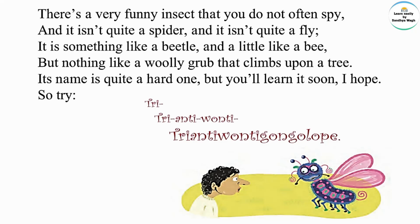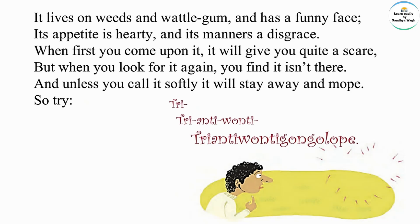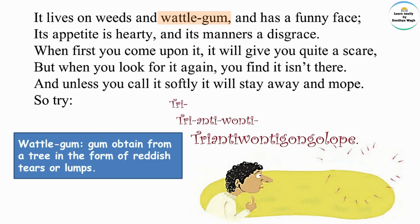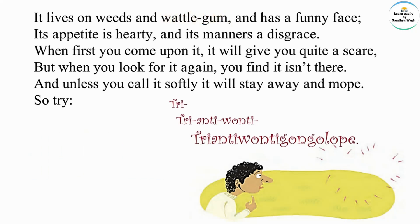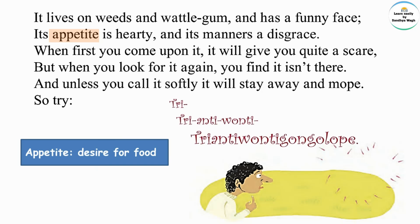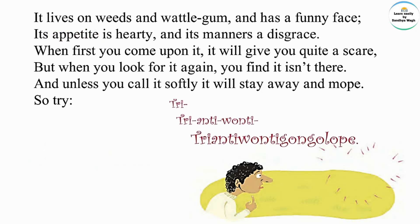Now let's read the second stanza. It lives on weeds and wattle gum and has a funny face. Wattle gum means gum obtained from a tree in the form of reddish tears or lumps. Its appetite is hearty — appetite means desire for food — and its manners a disgrace.